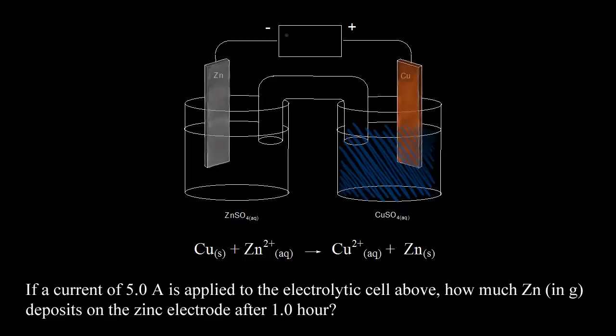So we need an external voltage source, and here's our battery. We know electrons come from the negative terminal of the battery, and electrons are forced onto the zinc electrode.